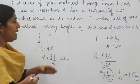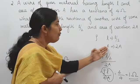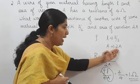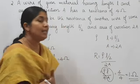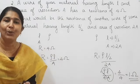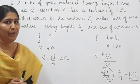When the length changes to L by 2 and area of cross section changes to 2A, the new resistance becomes equal to 1 ohm.